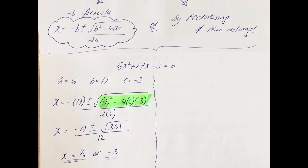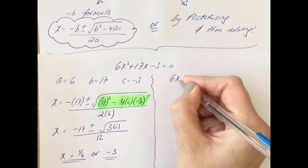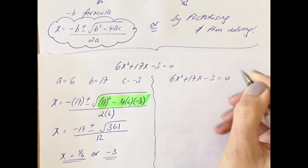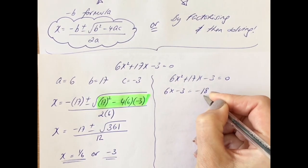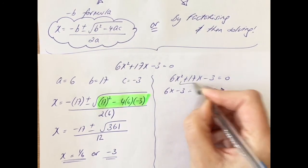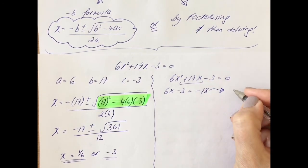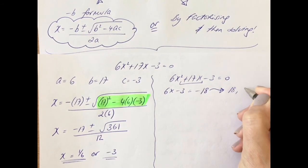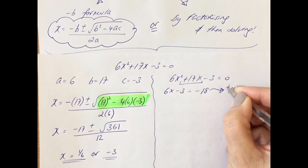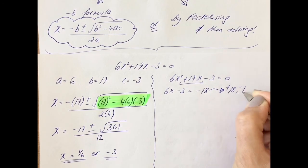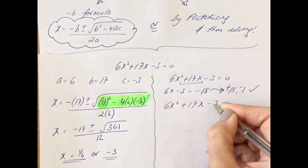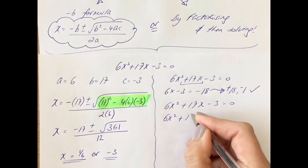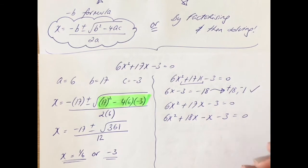Now we are going to solve it by the factorizing method. Your four-step factorizing method — the first step is to multiply the first number by the last number, and I'm getting a minus 18. Second step is to get factors of minus 18 that will add together to make 17, a positive 17. Factors of 18 would be 18 times 1, and to get 17 it would be a plus 18 minus 1. Double-check: if you multiply a plus 18 by a minus 1 you would get a minus 18, and that works.